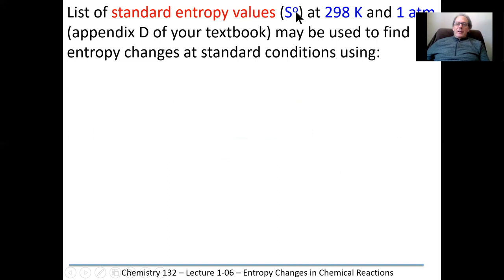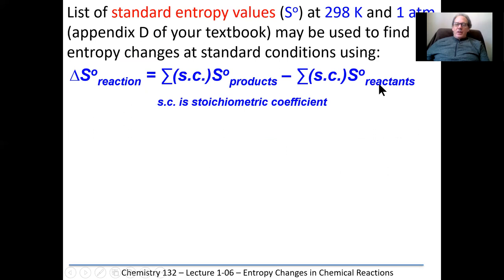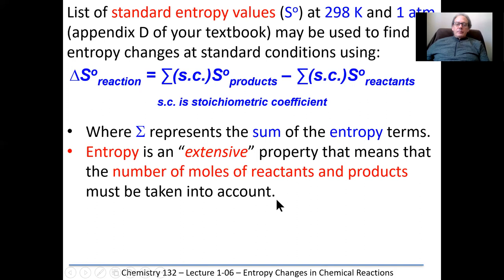A list of entropy values is found in your textbook — note that the degree sign indicates standard temperature of 298 Kelvin at one atmosphere. It's in Appendix D of Petrucci. The change in entropy for any reaction equals the sum of the entropies of the products minus the sum of the entropies of the reactants, making sure to use the stoichiometric coefficients in the balanced chemical equation. The most common mistake students make is forgetting to use the number of moles in the balanced equation.